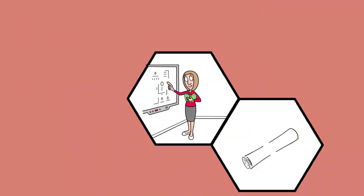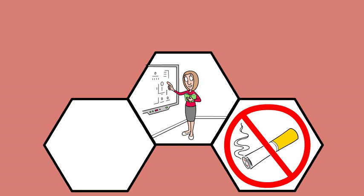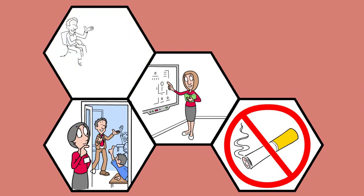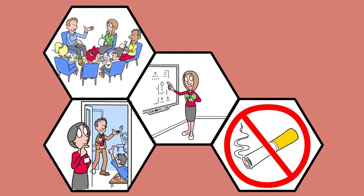Observational learning has practical applications in education and behavior modification. In classrooms, teachers often use modeling to demonstrate desired behaviors, and in therapeutic settings, individuals may learn adaptive behaviors by observing others who exhibit them successfully.